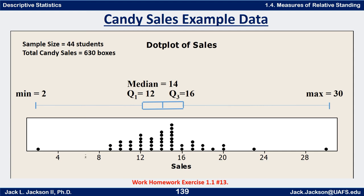If you did this correctly, it should look something like this. The dot plot goes from 2 to 30. There are a bunch clustered at 15, a bunch of 14s, one value way down here by itself, and one way up here — an underachiever and an overachiever. There are 44 students, so n equals 44. Adding up all the boxes, it turns out to be 630 boxes of candy sold altogether. The minimum is 2, so that's where the bottom whisker starts, and the maximum is 30 at the top.